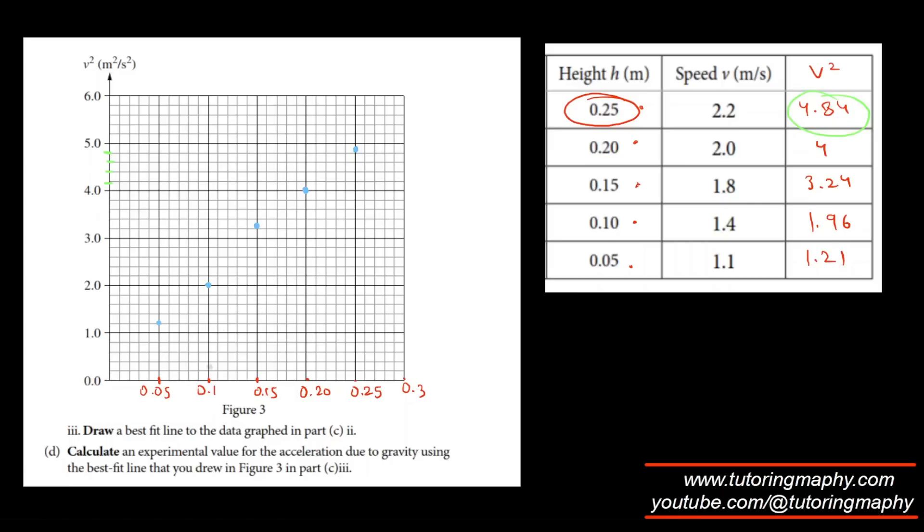This is how it looks like. We have to draw a line of best fit as well. Let me try to draw as accurate as possible. Probably this is going to look something like this. Not bad, not bad at all. After the line of best fit, we need to find the experimental value for acceleration.